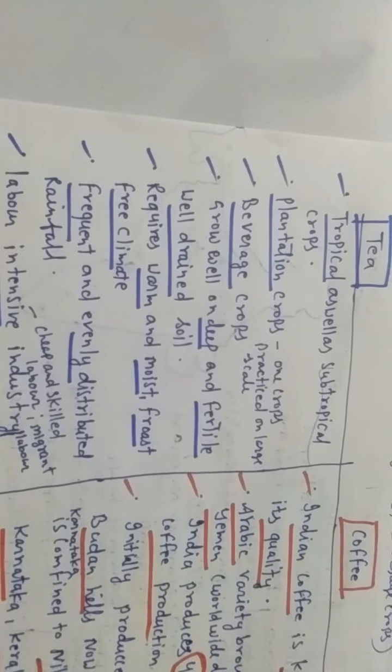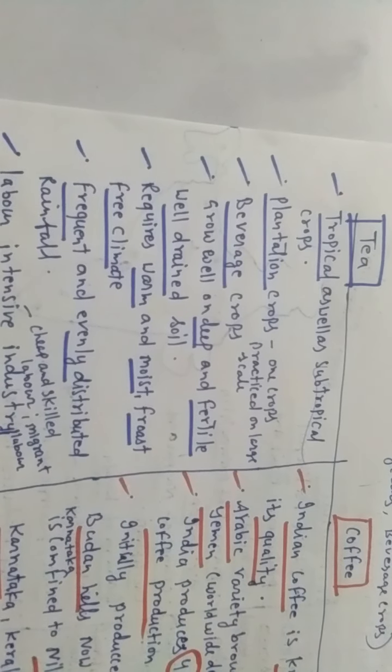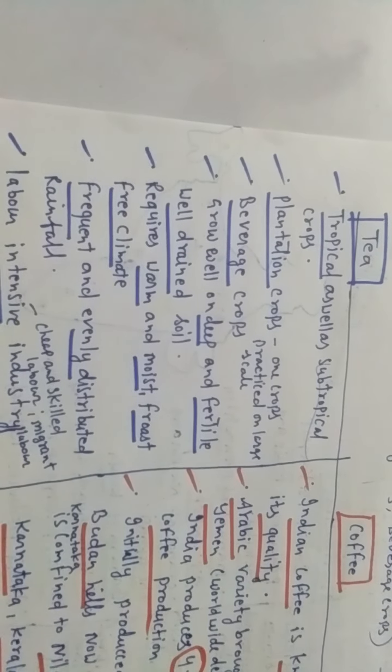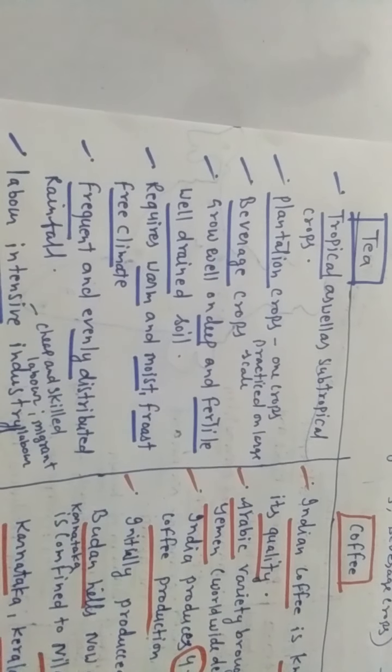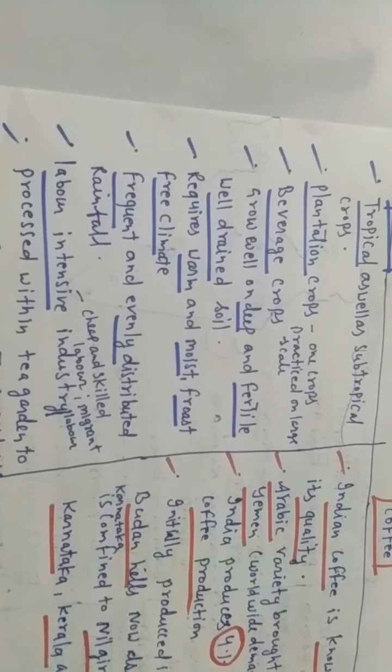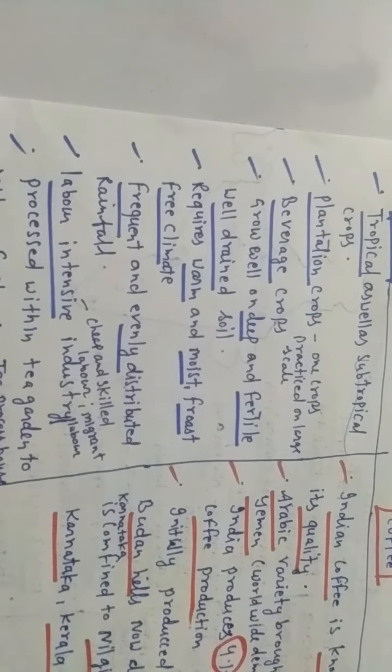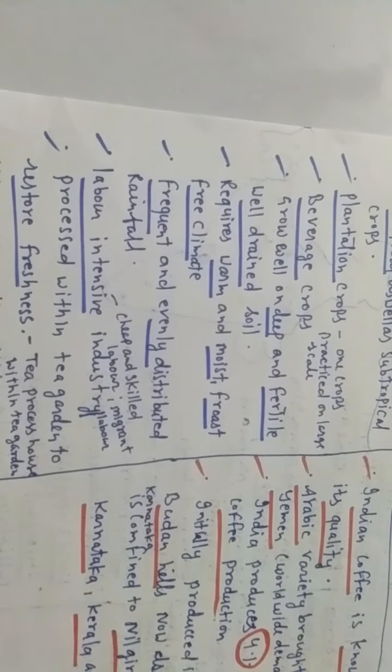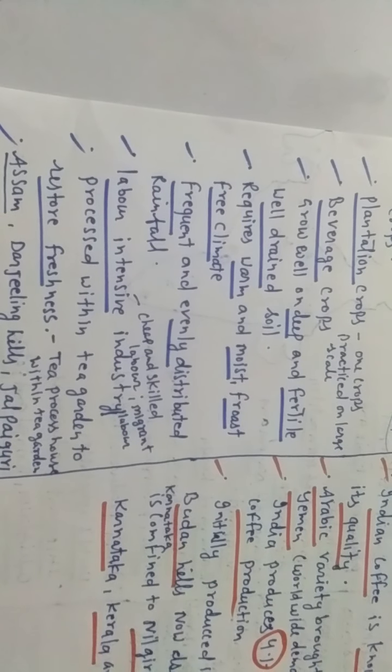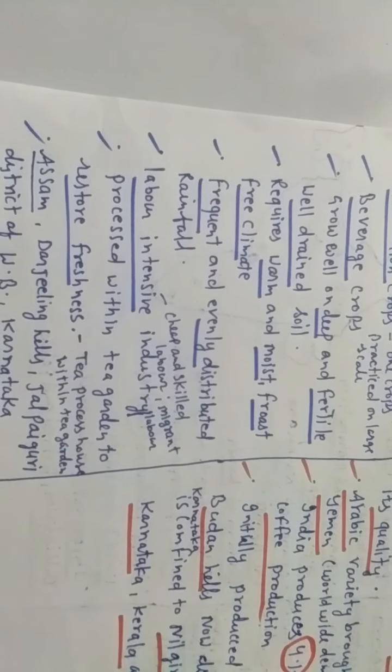Tea is a crop which can be grown only in conditions where it gets water throughout the year and also some humidness or hotness. It requires water frequently and evenly distributed throughout the year. It is labor-intensive based agriculture because it requires cheap and skilled labor. Migrant labor is also very used. It is processed within the tea garden to restore freshness. Tea gardens have tea processing houses available to maintain the freshness of tea leaves so they can maintain freshness to the consumer.